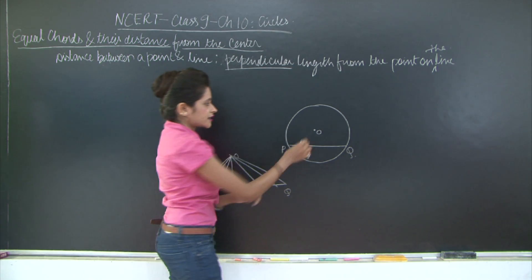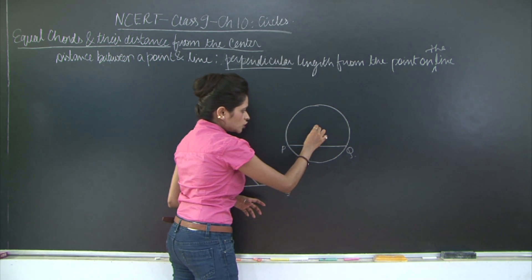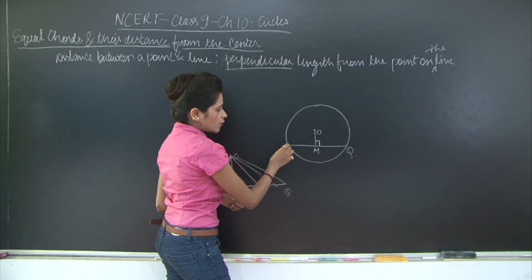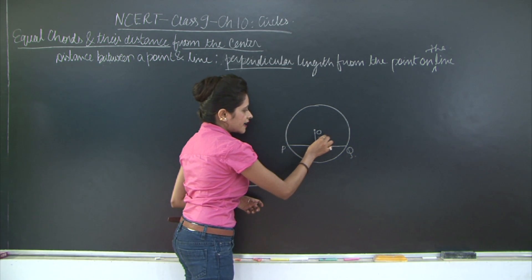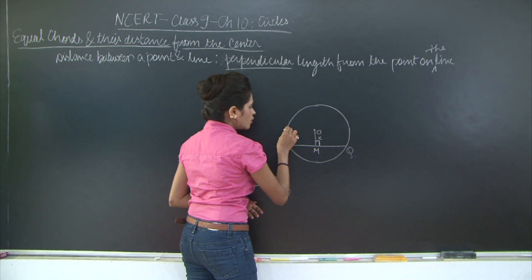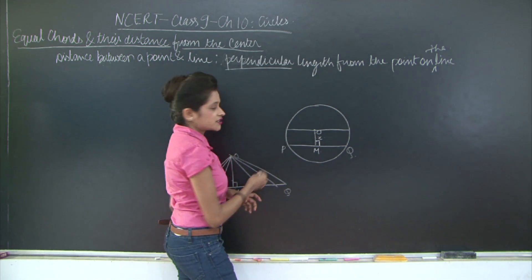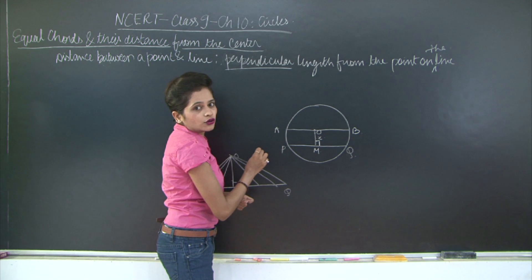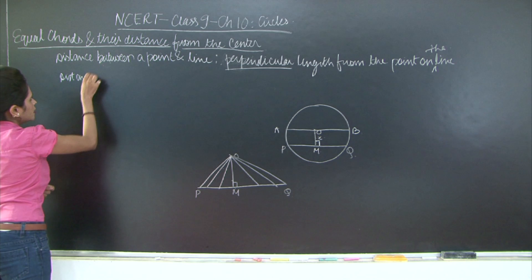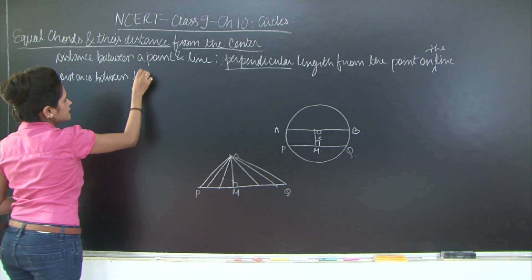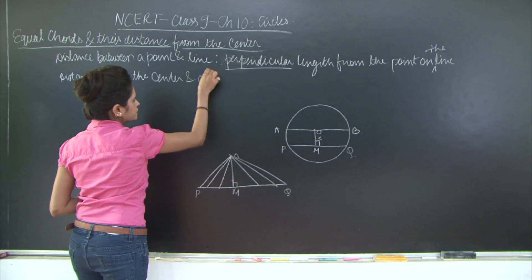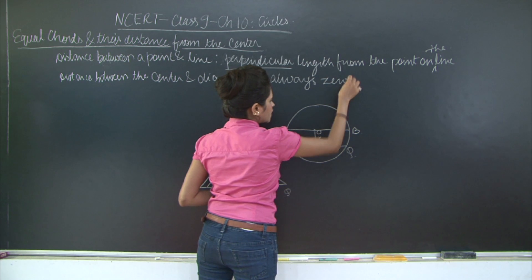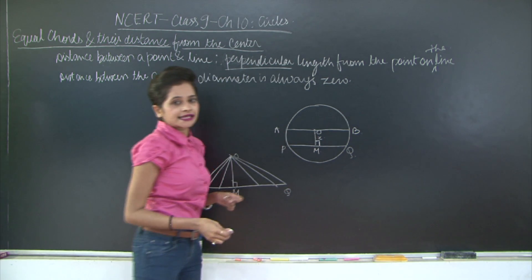Moving back to the circle: the center is O and the chord is PQ. The perpendicular distance between O and PQ, which is OM, is the distance between center O and chord PQ. Let's call this length X. But what if we have the diameter? The diameter passes through the center of the circle — let the diameter be AB. The distance between the center and the diameter is always 0, because the diameter passes through the center point itself.